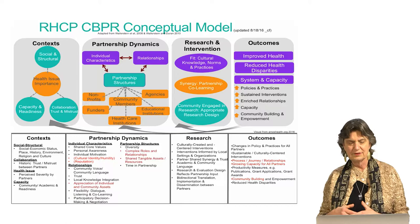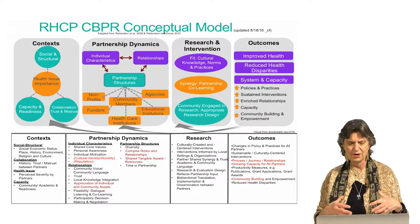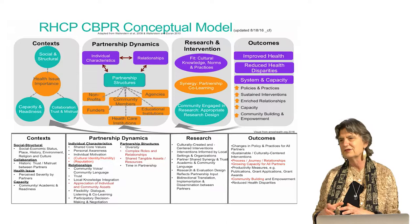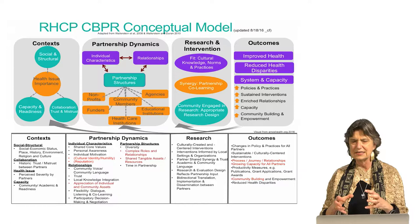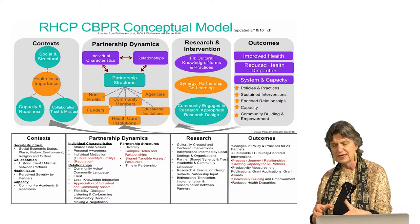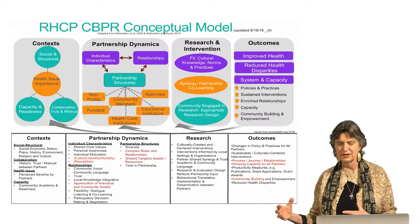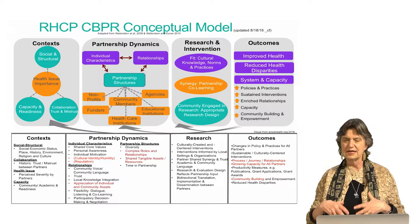They've added some concepts in red — cultural humility and identity as a stronger part, this appreciation of individual and community assets, and the complexity of roles and relationships, because they're serving three very different communities. So that complexity is a dynamic part of the model for them. There are some tangible assets. Moving to outcomes, they're talking about outcomes really as a process, as a journey, a set of relationships. The model didn't have to stay static — they could take it and make it theirs.